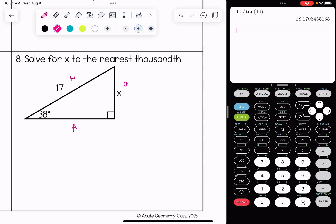I am going to be using sine here, because I have opposite and hypotenuse. So sine of 38 is equal to x over 17.